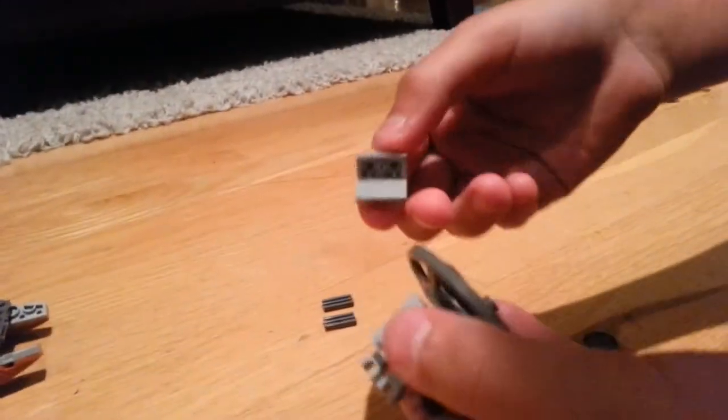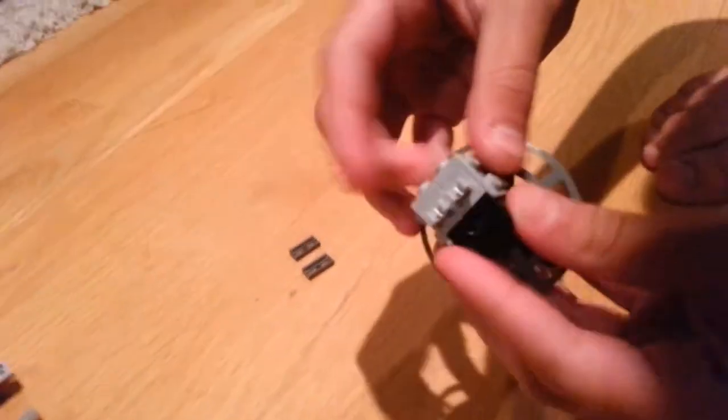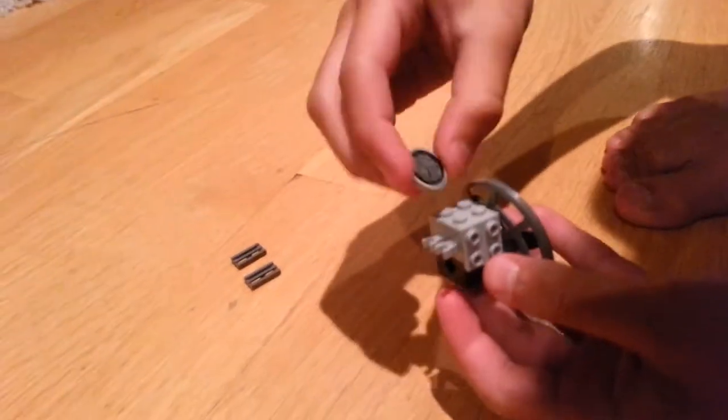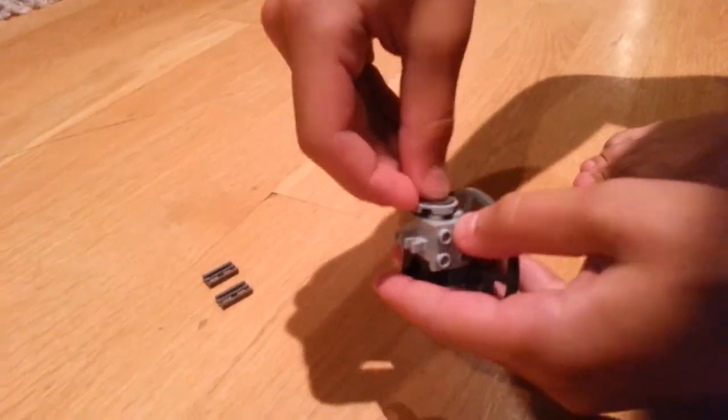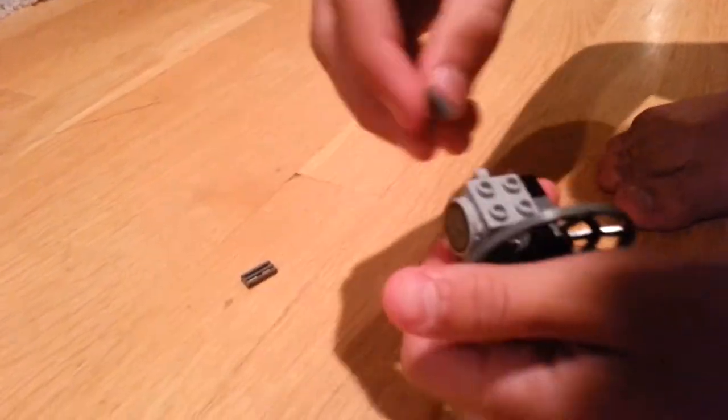So then once you have that ready, you put these both on. These ones like this. Then you get one of these pieces. It can be flat. This is just for decoration. And then you can just decorate these.